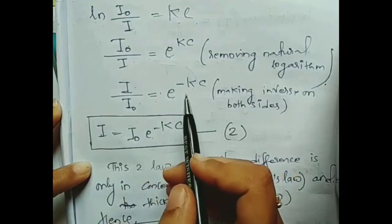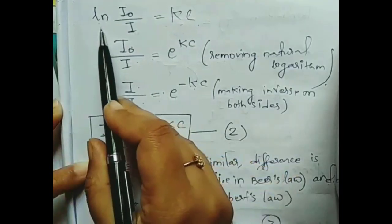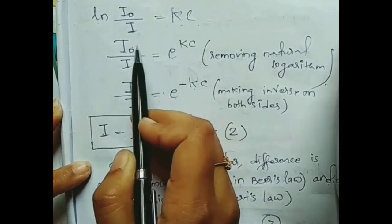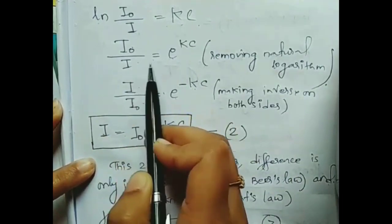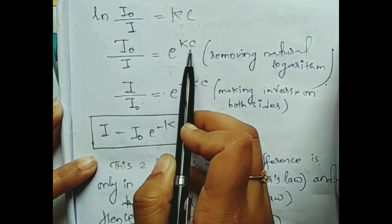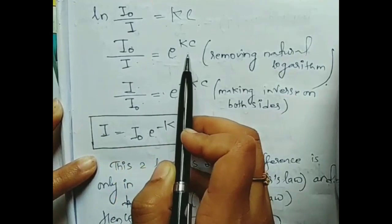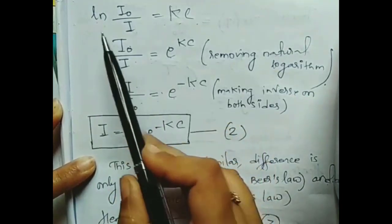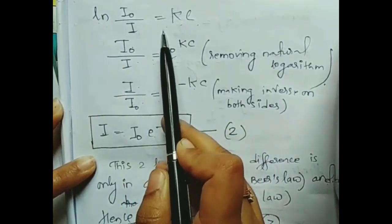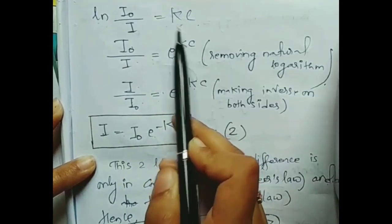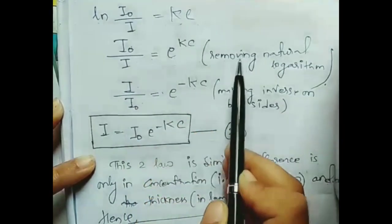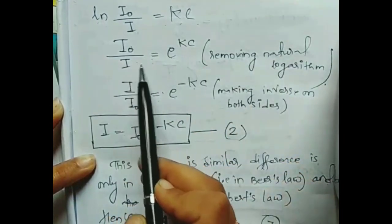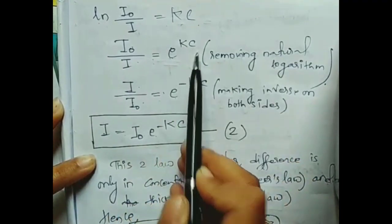After rearranging the equation we get ln(I naught / I) equals KC. Removing the natural logarithm gives I naught by I equals e to the power KC.